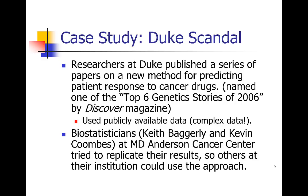Some statisticians tried to actually reproduce the method because it was so potentially impactful. Researchers at Duke published a series of papers starting in 2006 that introduced a new method for predicting patient response to cancer drugs. It used publicly available data — data that anybody could access to potentially use this method to find better drugs for cancer patients.